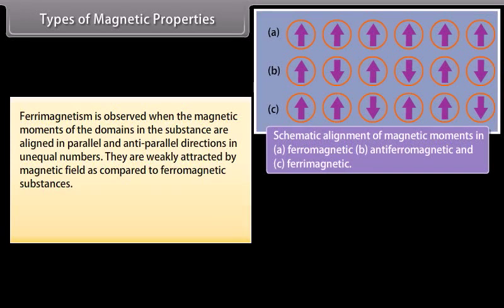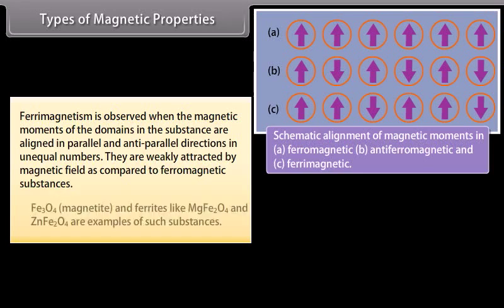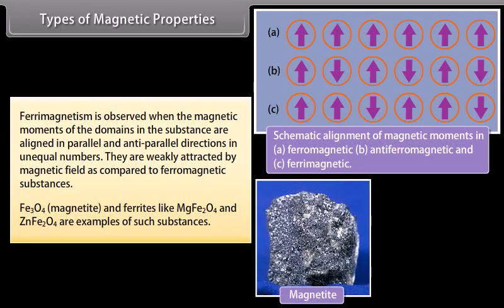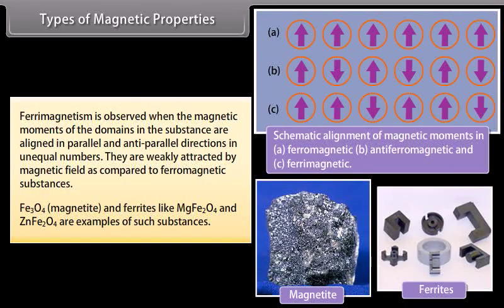Ferrimagnetism is observed when the magnetic moments of the domains in the substance are aligned in parallel and anti-parallel directions in unequal numbers. They are weakly attracted by magnetic field as compared to ferromagnetic substances. Fe3O4, magnetite, and ferrites like MgFe2O4 and ZnFe2O4 are examples of such substances.